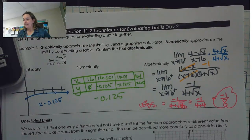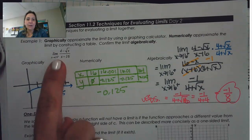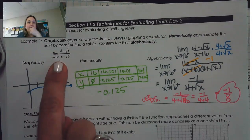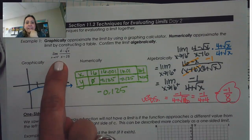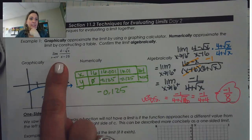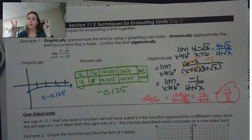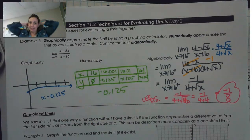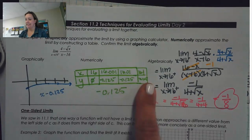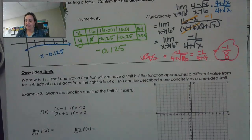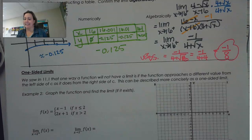So those are some different ways that we looked at limits. I want to point out that this is looking at 16 plus, and that 16 plus really means to the right of 16 — numbers that are bigger than 16. That brings us to this idea of one-sided limits.